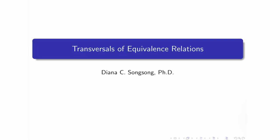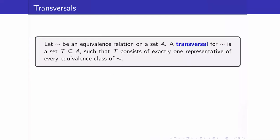In this lesson, we are going to discuss transversals of equivalence relations. What is a transversal? Suppose that we have an equivalence relation on a set A. A transversal for this equivalence relation is a subset T of the set A such that T consists of exactly one representative of every equivalence class of your equivalence relation.